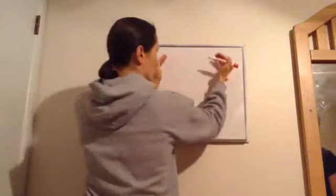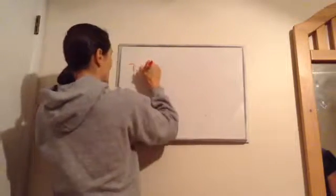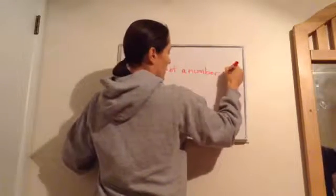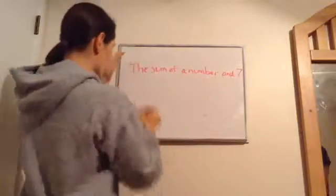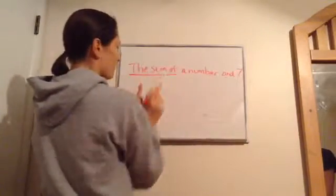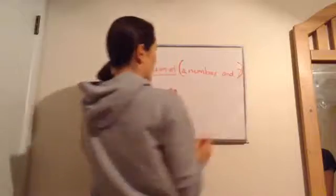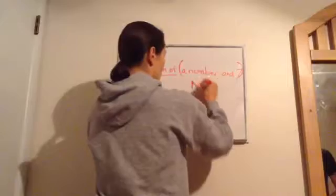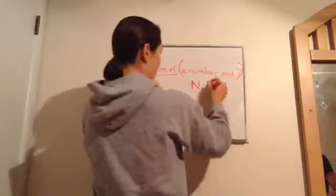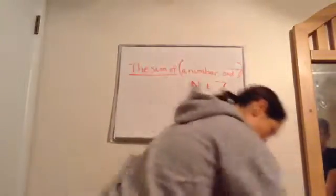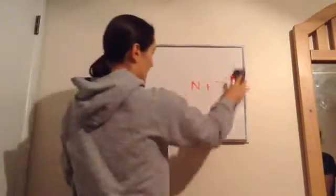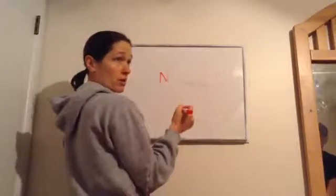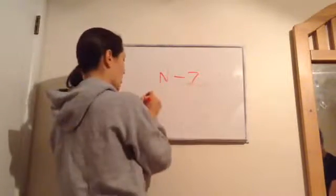Whenever you see something like 'the sum of a number and seven,' I want you to get used to underlining 'the sum of,' and then identify what we're finding — a number and seven. We're finding the sum of a number and seven. This next one says 'seven less than a number.'